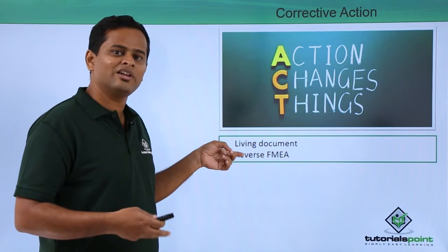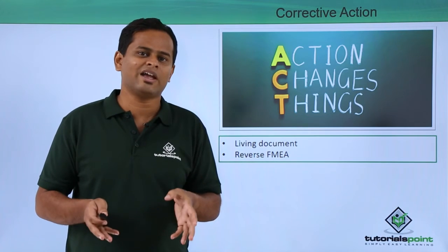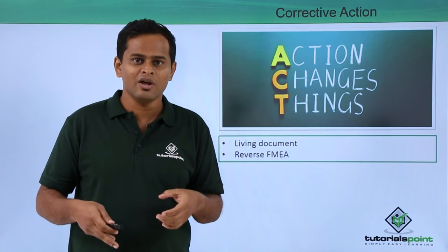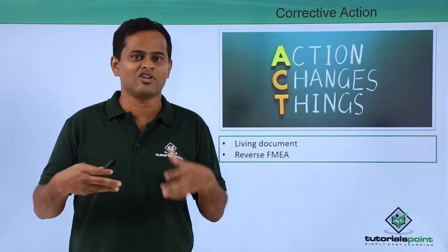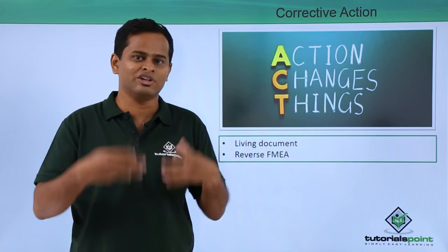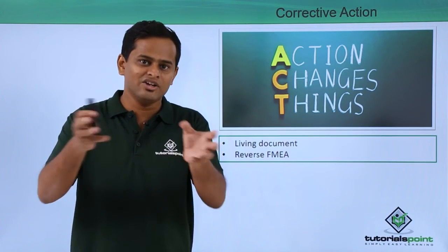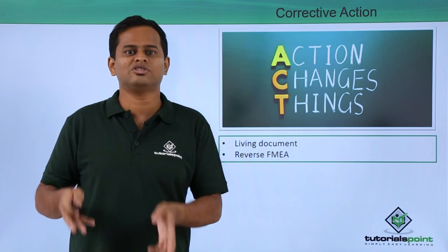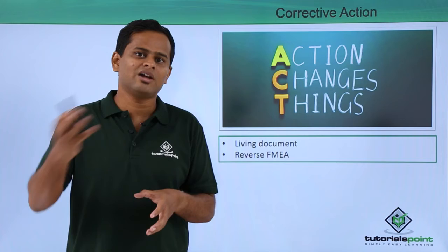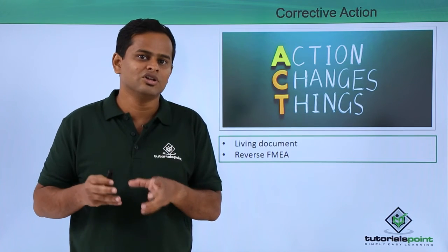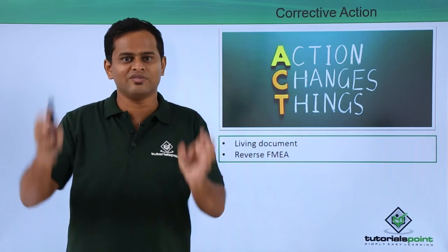That is why we call FMEA a living document. There are various mechanisms possible, like reverse FMEA — that means the production line will be running, and after start of production several months or years ago, you go with a cross-functional team and identify the various risks or failure modes available in that particular process or product, then come back and take certain actions so that the before RPN and the after RPN will be significantly lower.